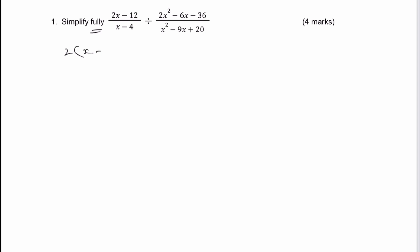The first fraction is fairly straightforward. I can just factorise the numerator for 2 and I get 2 brackets x minus 6, and the bottom denominator remains exactly the same. Now we are dividing by a fraction, so I'm going to multiply and flip. This becomes the new numerator and that's fairly straightforward. That's going to be x minus 4 multiplied by x minus 5.